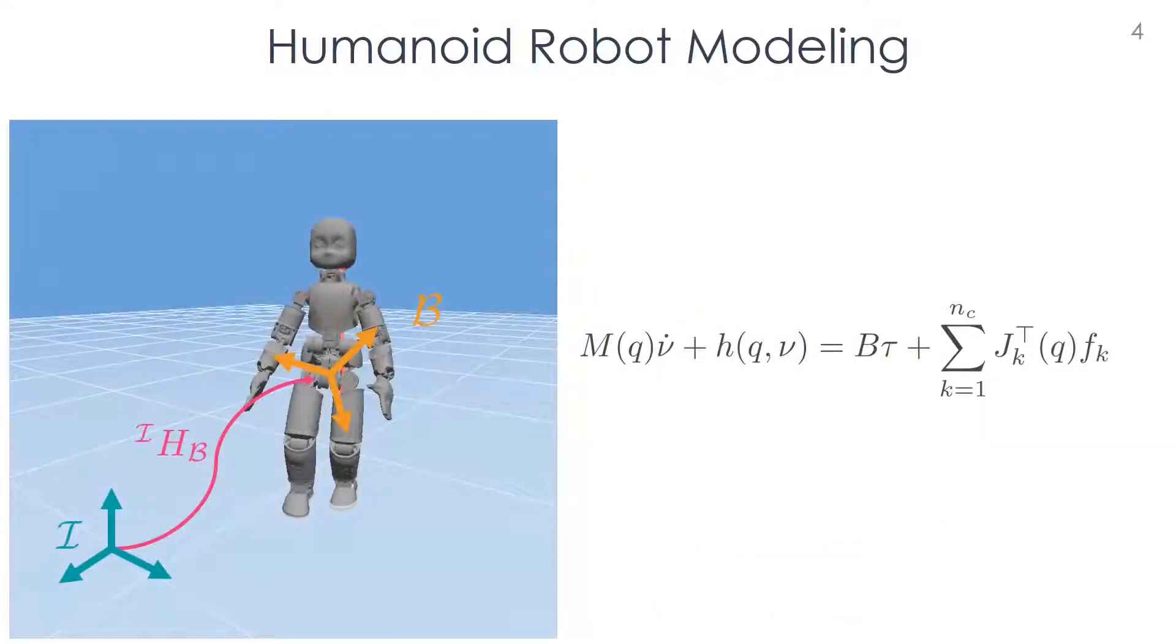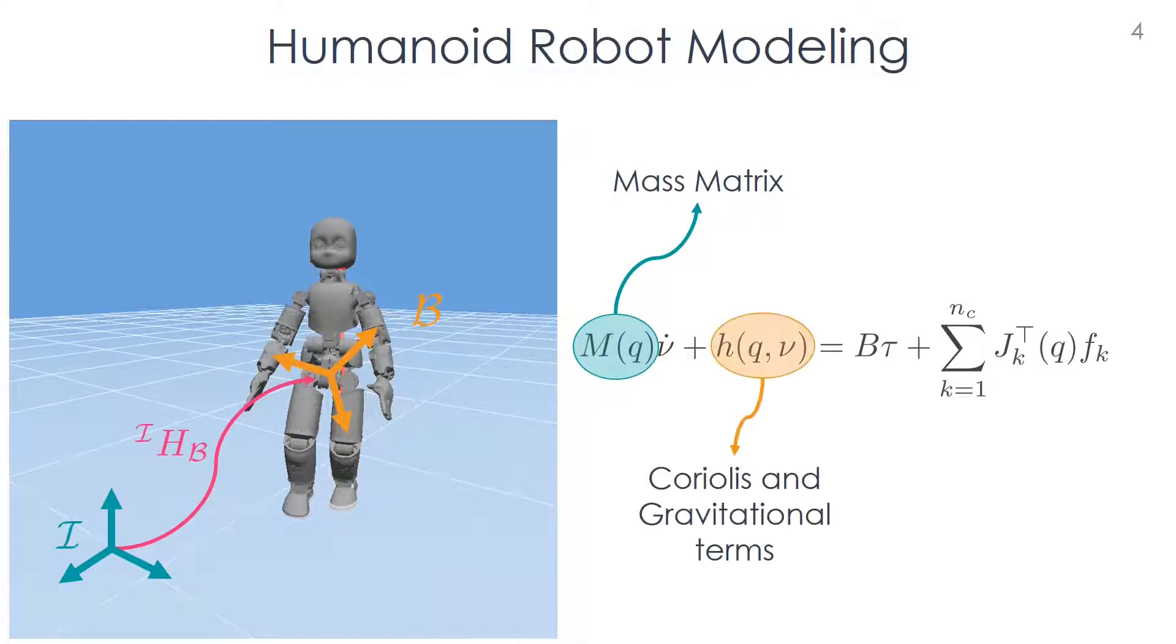A humanoid robot is often described as a floating base system. The configuration of the system consists of the joint values and the pose of a frame rigidly attached to the robot with respect to the inertial frame. The dynamics of the floating base system can be described by the Euler-Poincaré equation, where M represents the mass matrix, H contains the Coriolis, the centrifugal and the gravitational terms, J is the contact Jacobian, while tau and F are the joint torques and the contact wrenches.